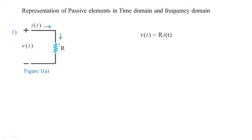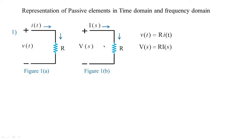We can convert this time domain analysis into frequency domain analysis with the help of Laplace transform, as shown in figure 1b. The input voltage V(t) in time domain changes to V(s) in frequency domain, and the current flowing is I(s). Since it is a resistive element and a resistor does not store any energy, V(s) = R·I(s). This is the frequency domain representation for resistive circuits.